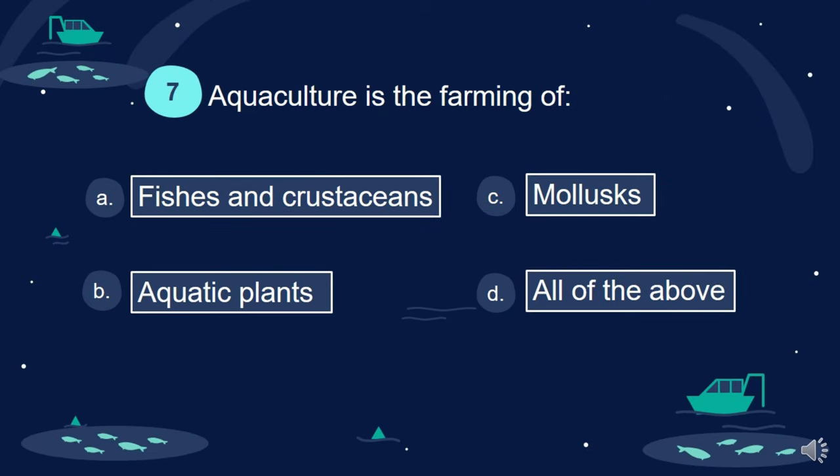Question 7. Aquaculture is the farming of: A. Fishes and crustaceans. B. Aquatic plants. C. Molluscs. D. All of the above.